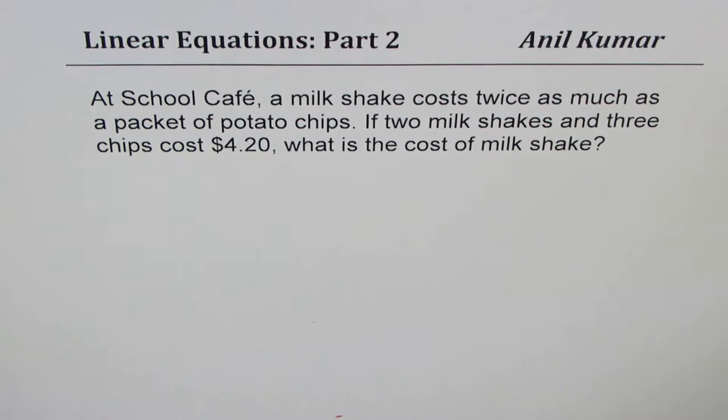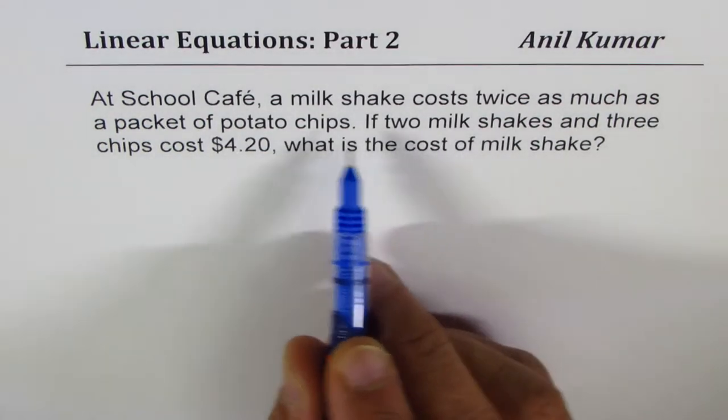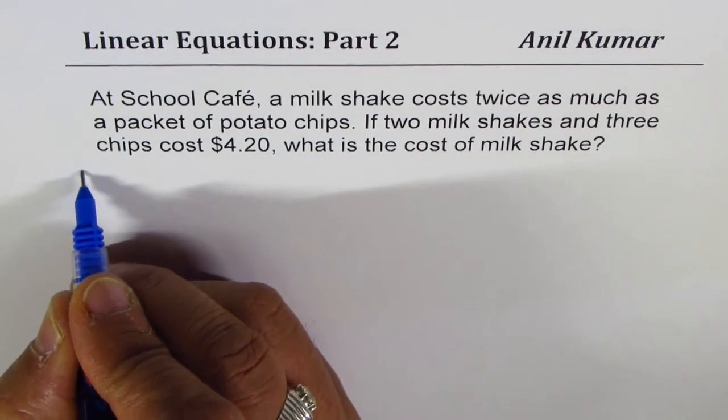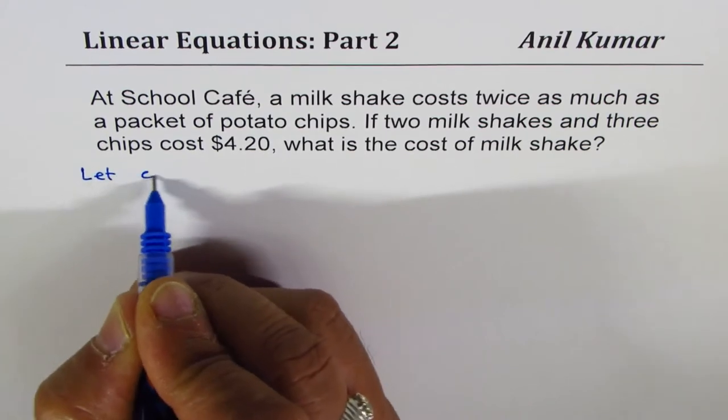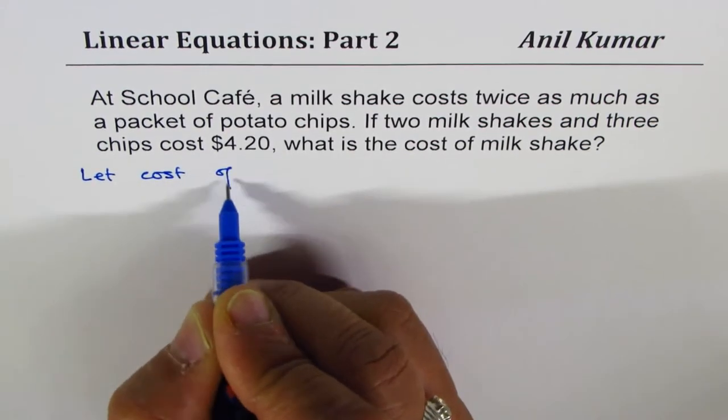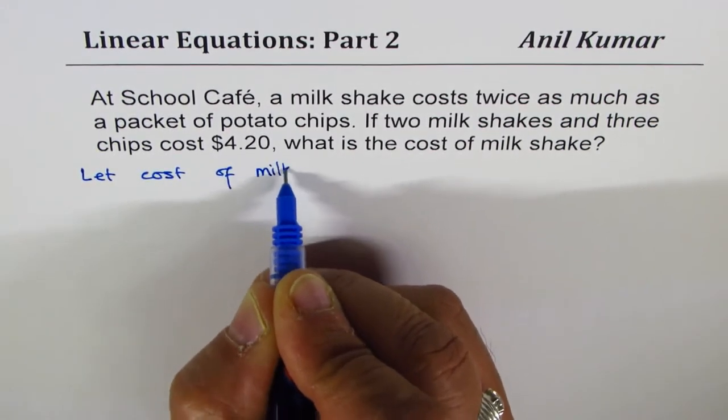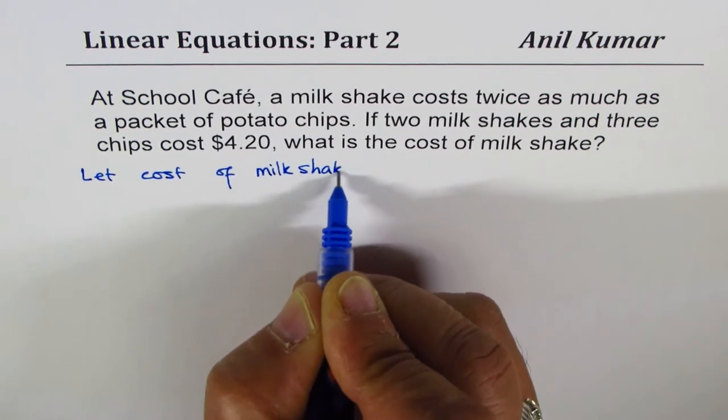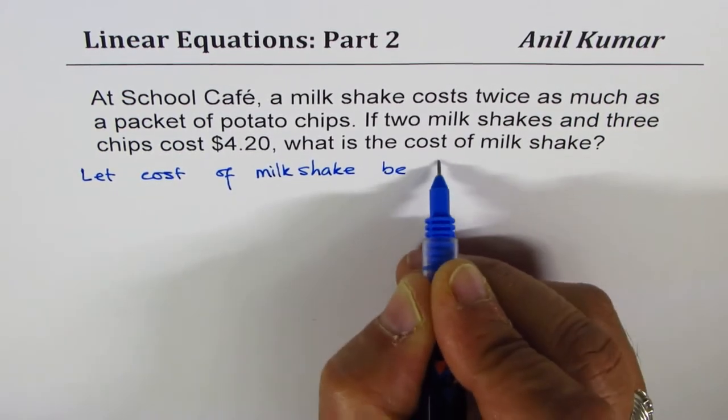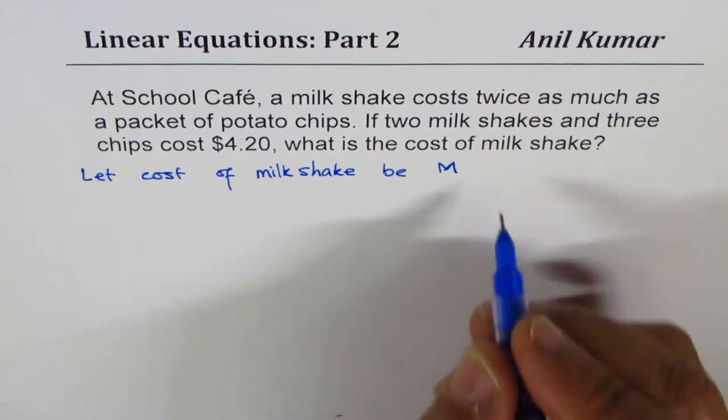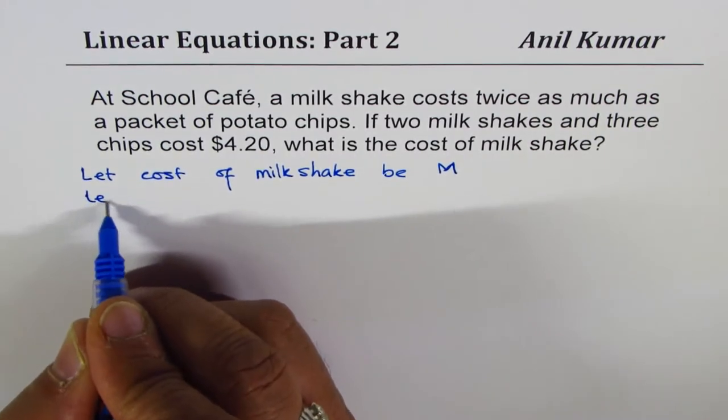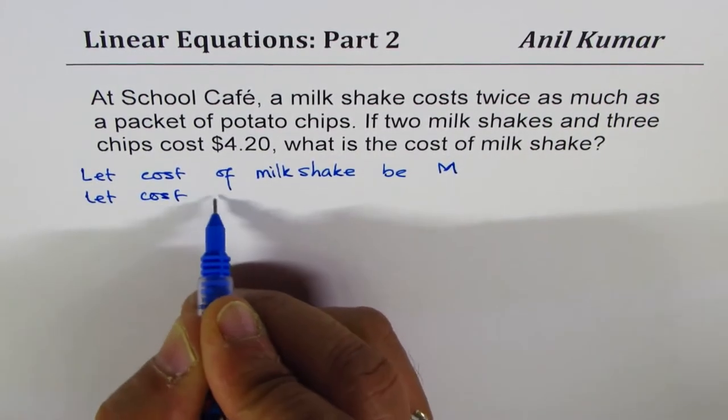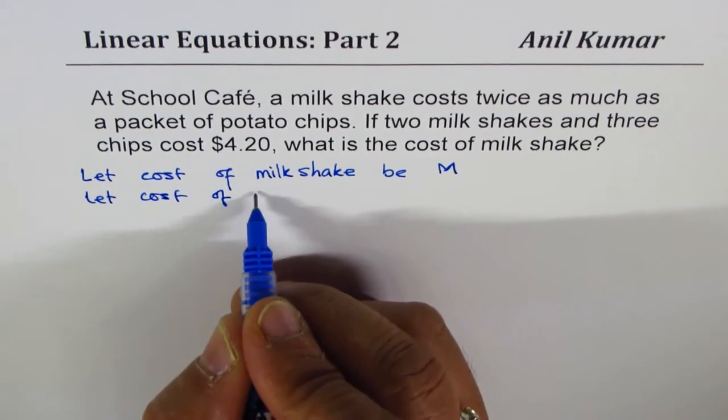We can begin with let statements. Let cost of milkshake be M, and let cost of potato chips be P.